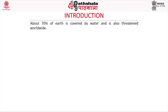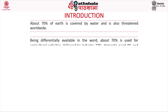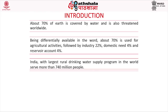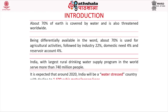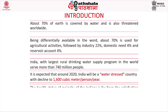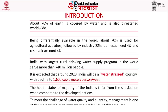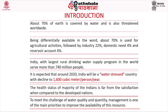Water is 70% available on earth in various forms and it is used for various purposes including drinking, industry, agriculture, and domestic needs. It is assumed that by 2020 India will be a water stress country with about 1600 cubic millimeters per person per day. The quality and quantity management of water is one of the major problems we have to address.